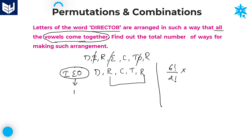Within the single entity, we have the 3 vowels I, E, O, which can be arranged in 3 factorial ways. So the total answer is 6 factorial divided by 2 factorial, multiplied by 3 factorial. That is 720 divided by 2, multiplied by 6, which equals 2160. That is the required answer for this question.